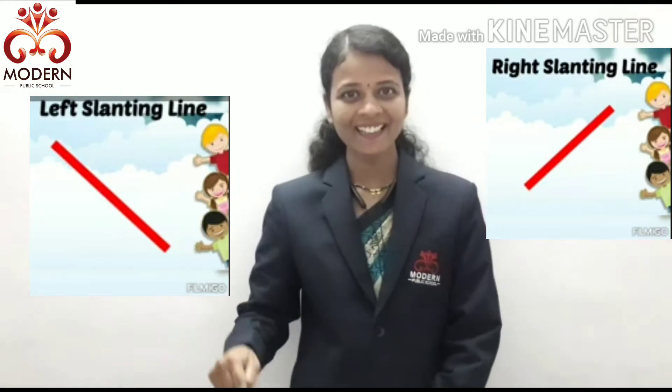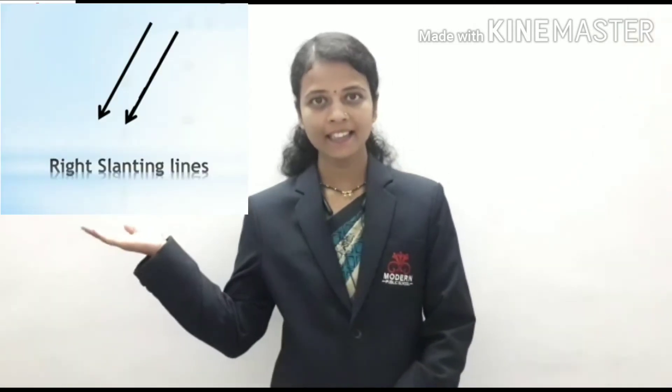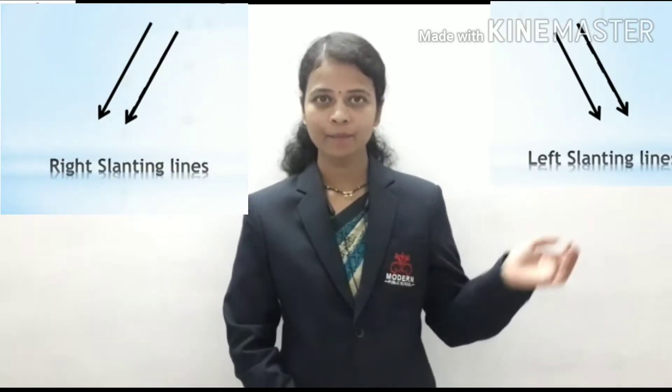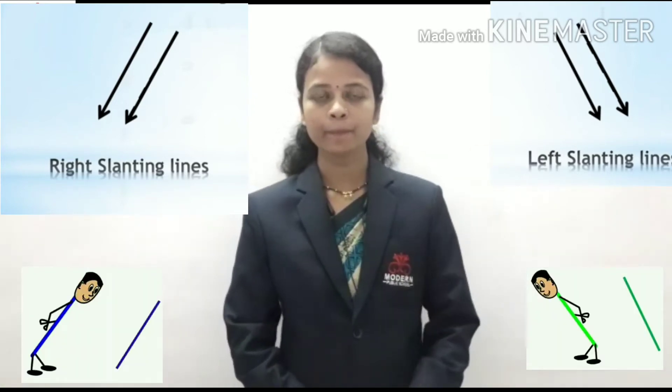Slanting line. Students, can you see this picture? In this picture, there are mountains. We draw the mountains using slanting line. There are two types of slanting line: right slanting line and left slanting line. Always draw slanting line from upward to downward.